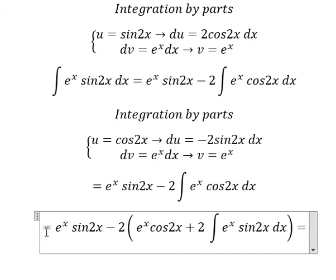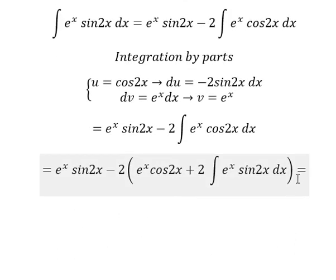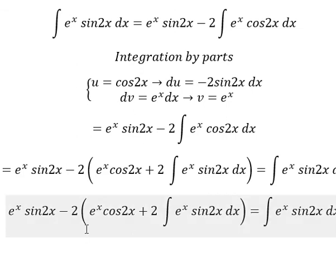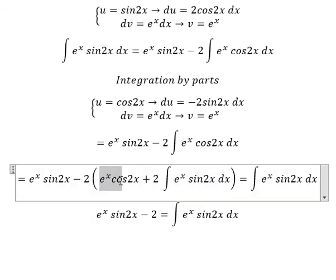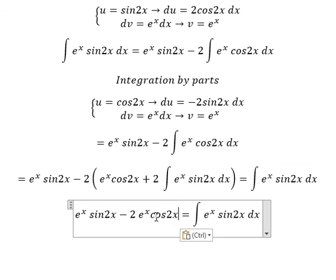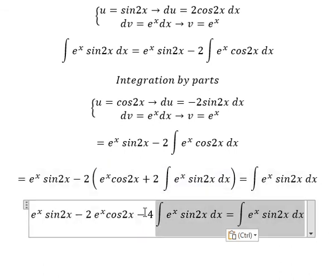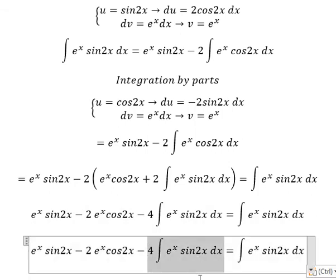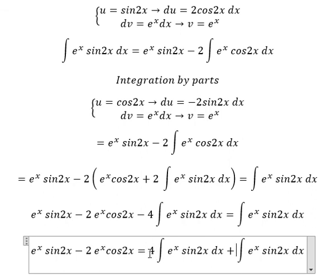Now we know that everything in here equals to the original integral. We have negative 2 multiplied by this expression involving e to the power of s times cos(2s) ds. Next, I will move this term to the right side.